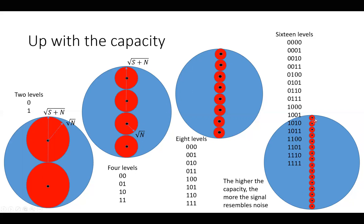And we see as the number of balls goes up, the distance between the noise, which is very close to the surface here on the red ball, and the signal level here in the middle will be smaller and smaller. So it will be more vulnerable to noise the more signal levels you have. And also an interesting observation is that the higher the capacity, the more the signal resembles noise.